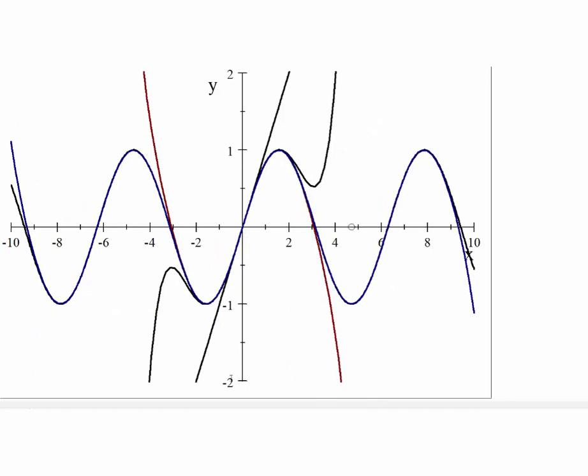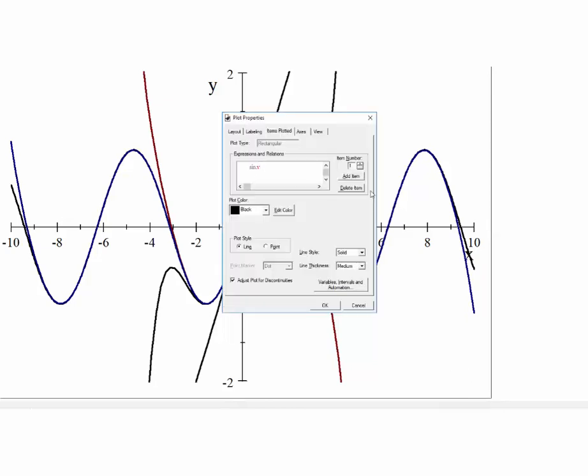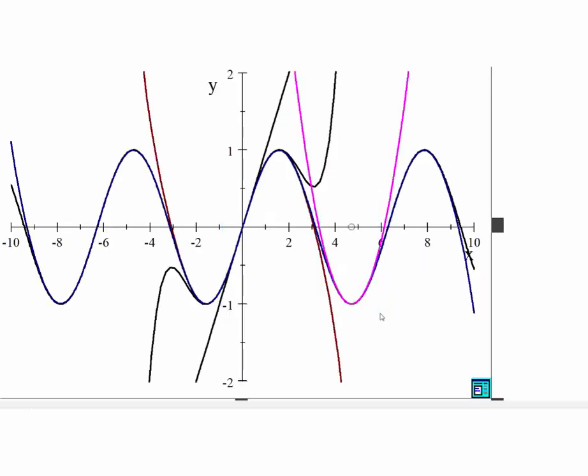These are our earlier approximations with the Maclaurin series. Now let's insert a Taylor polynomial of degree 2 at 3π/2 in magenta. You can see this parabola approximates the graph quite well near 3π/2.